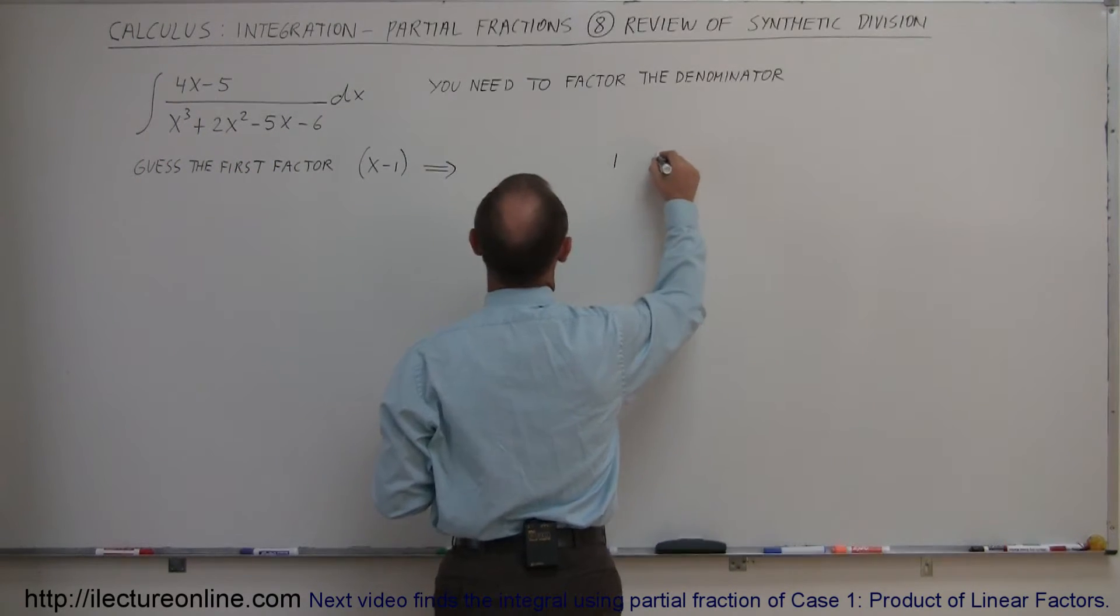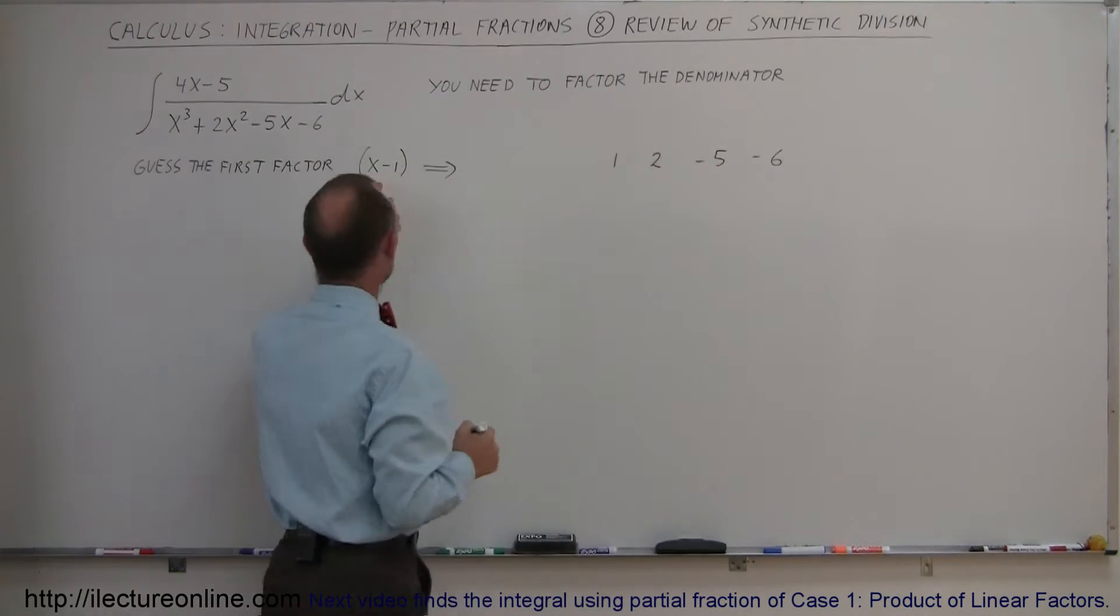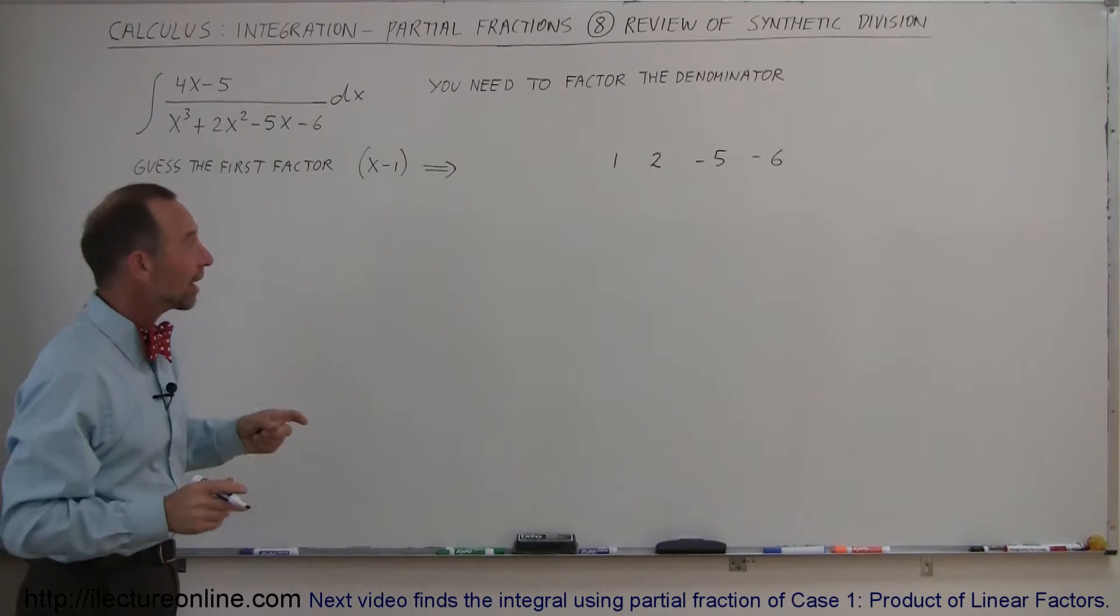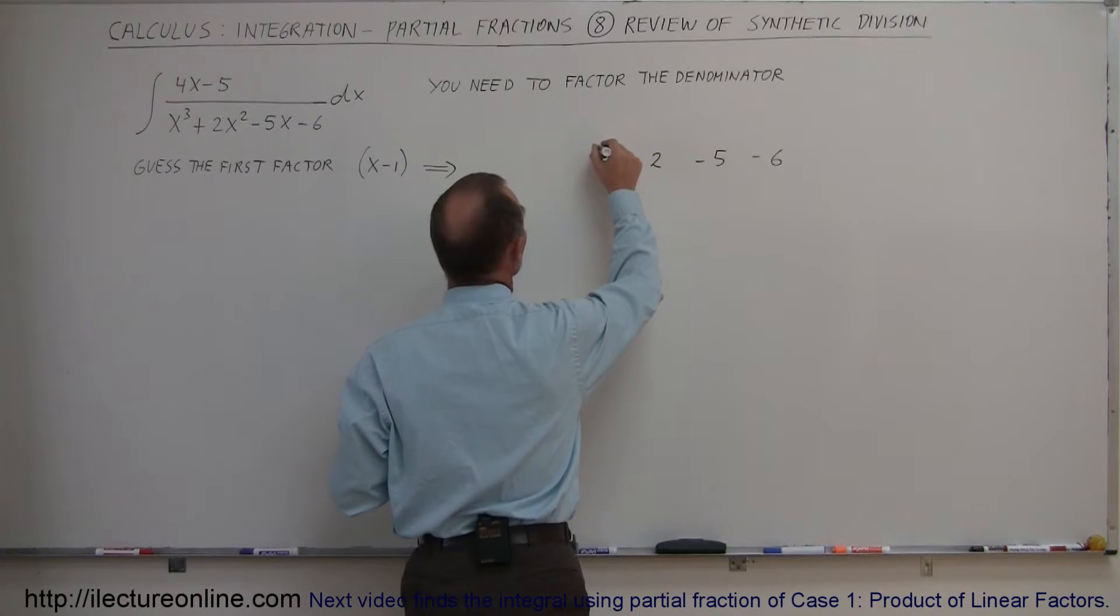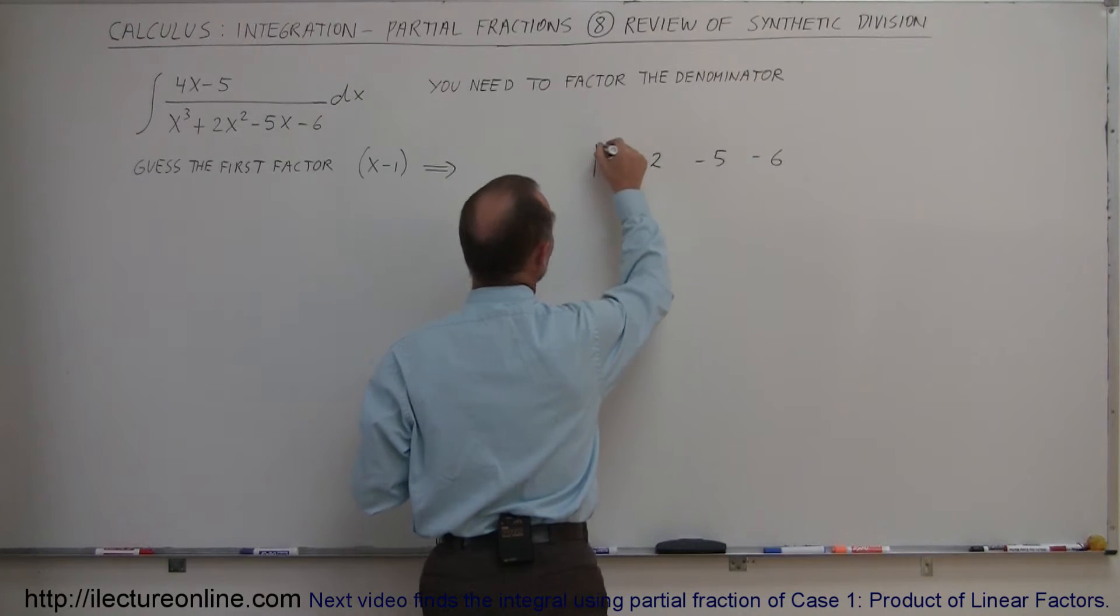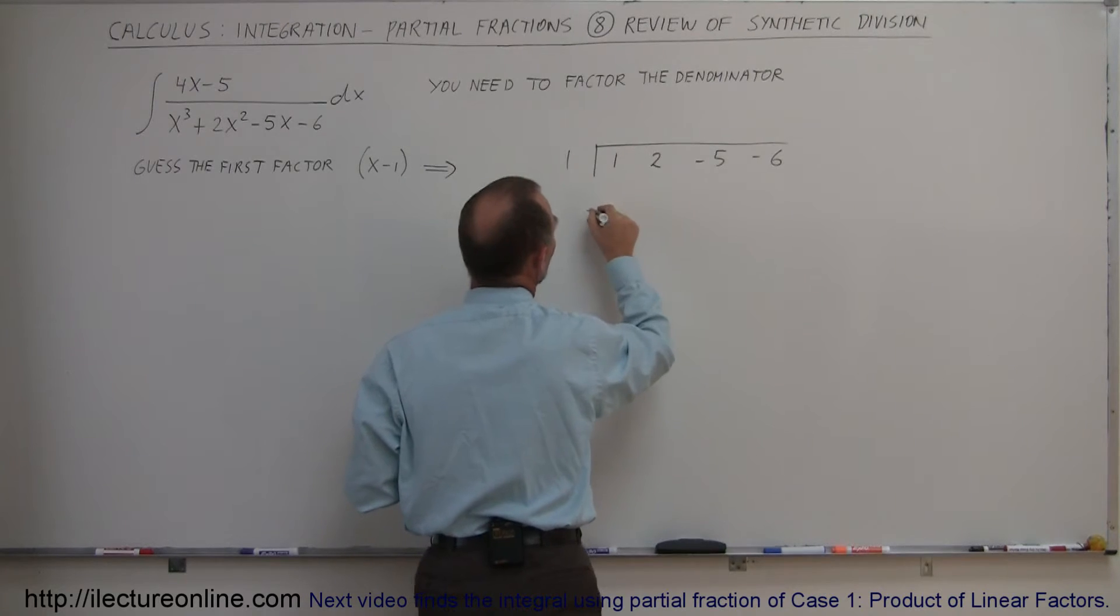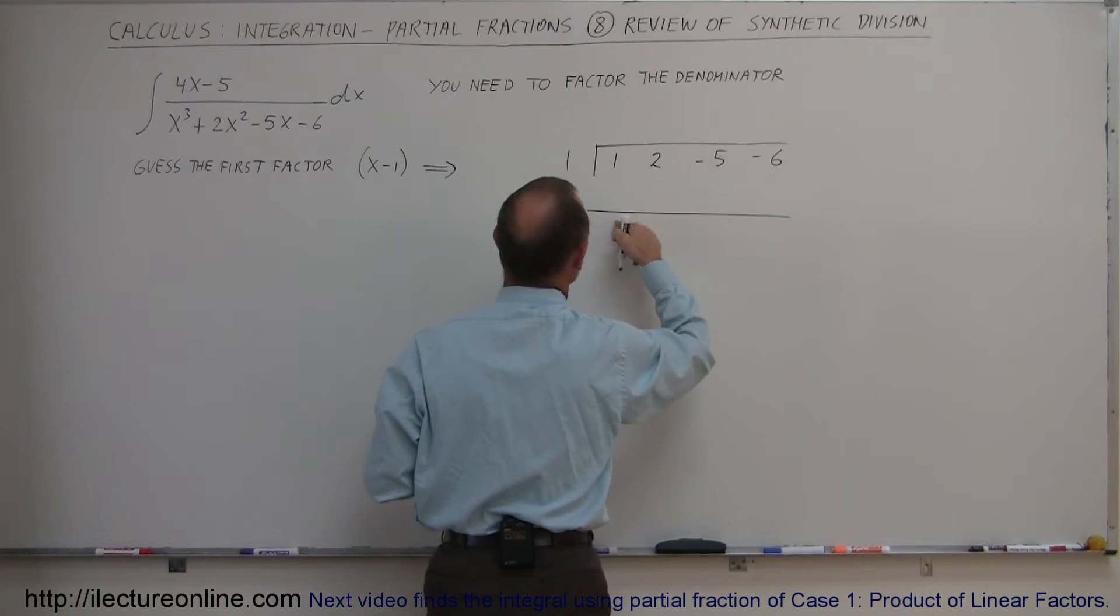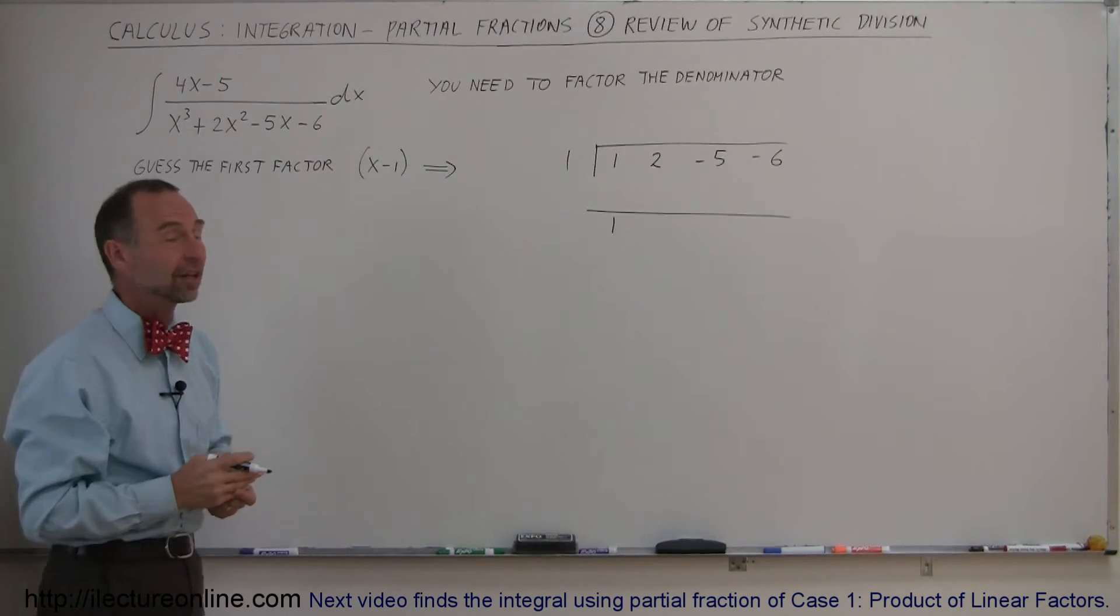We have a 1, a 2, a minus 5, and a minus 6. If x-1 is one of the factors, then x would have to be equal to 1. So you use the 1 then to try this out. You put a 1 here, and then you draw a line, and you bring the first coefficient down right here. That's just a mechanism of how you do synthetic division.